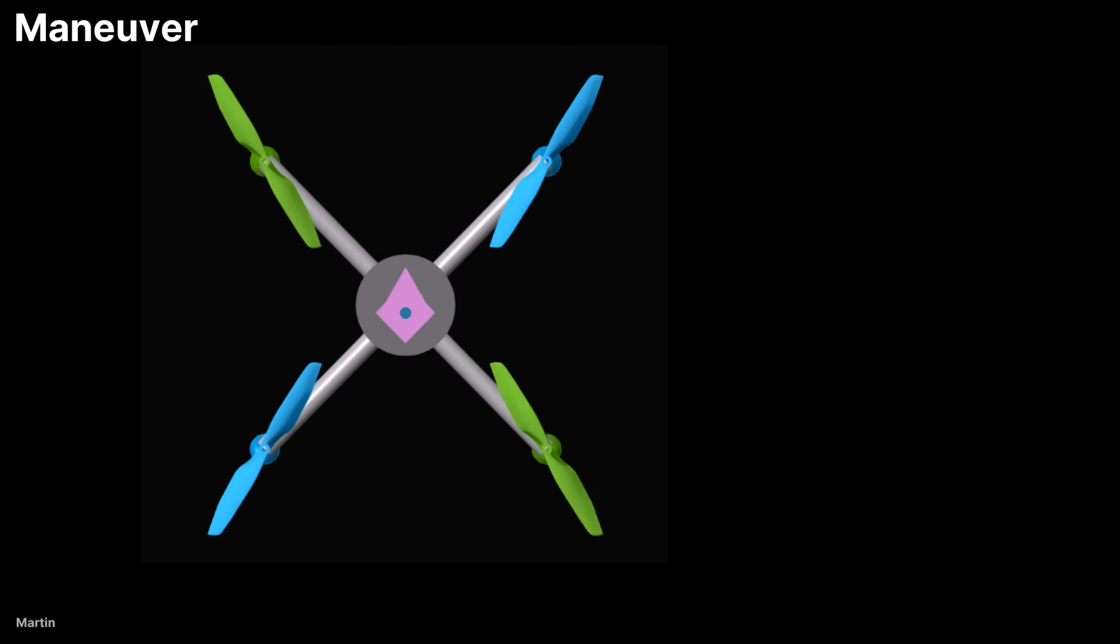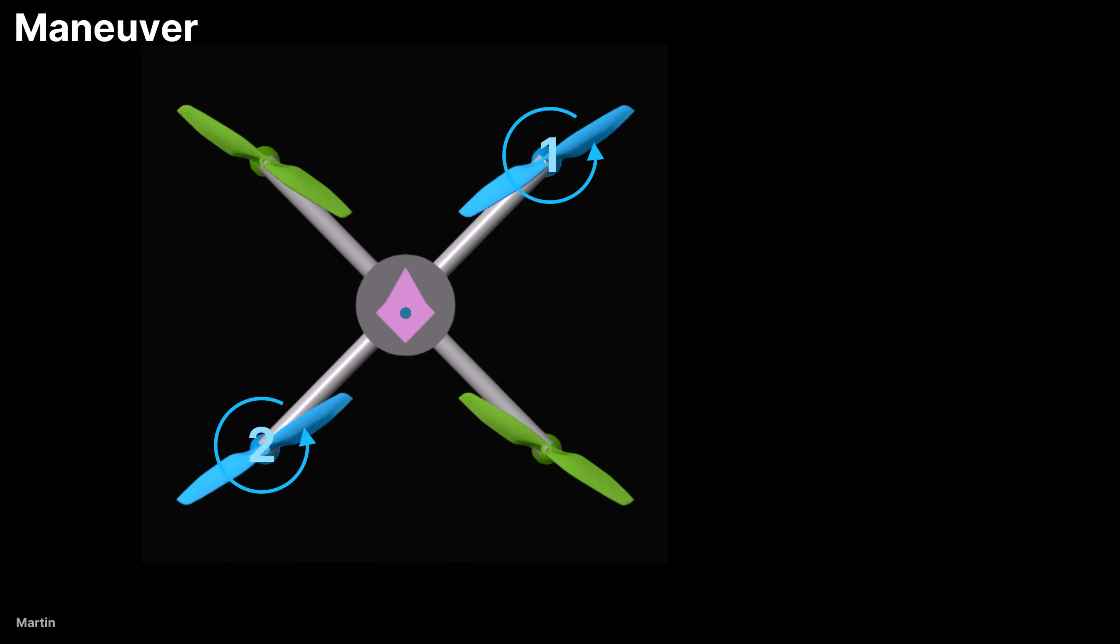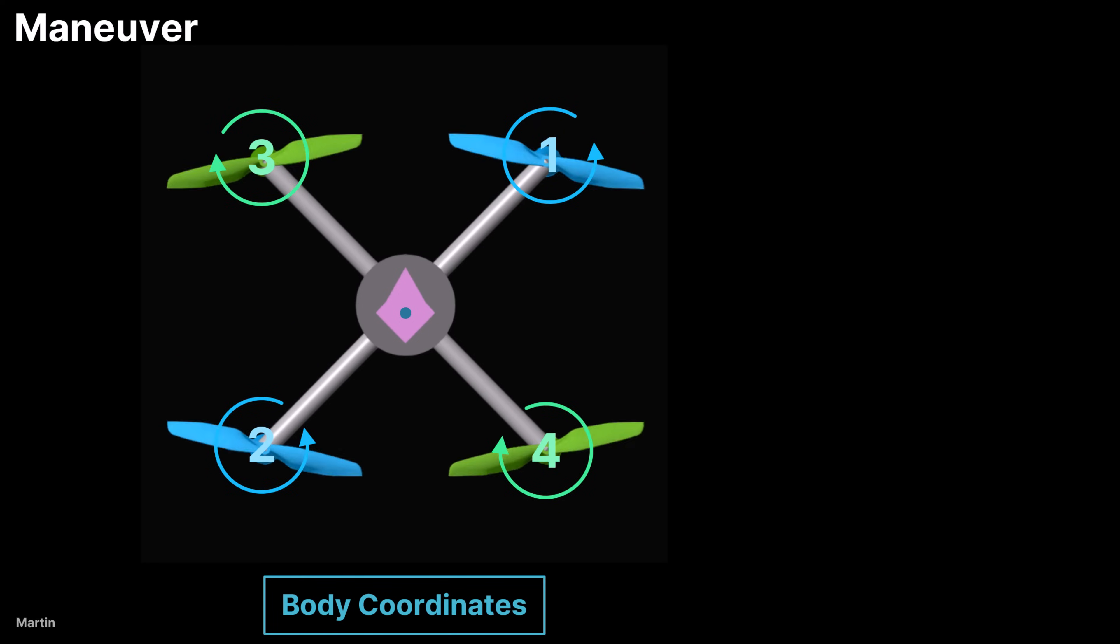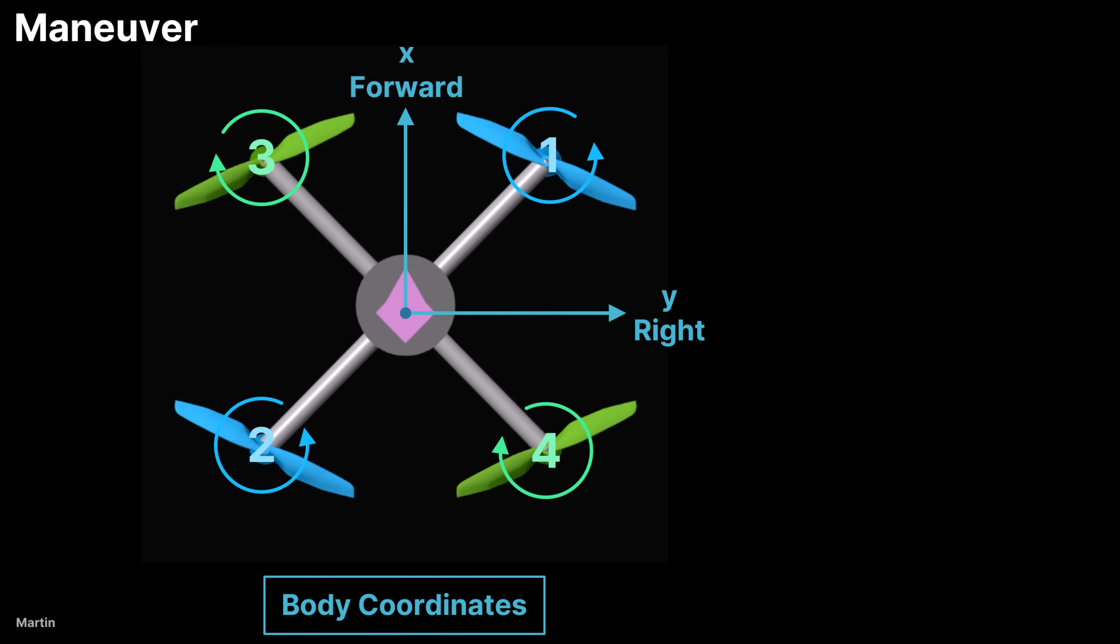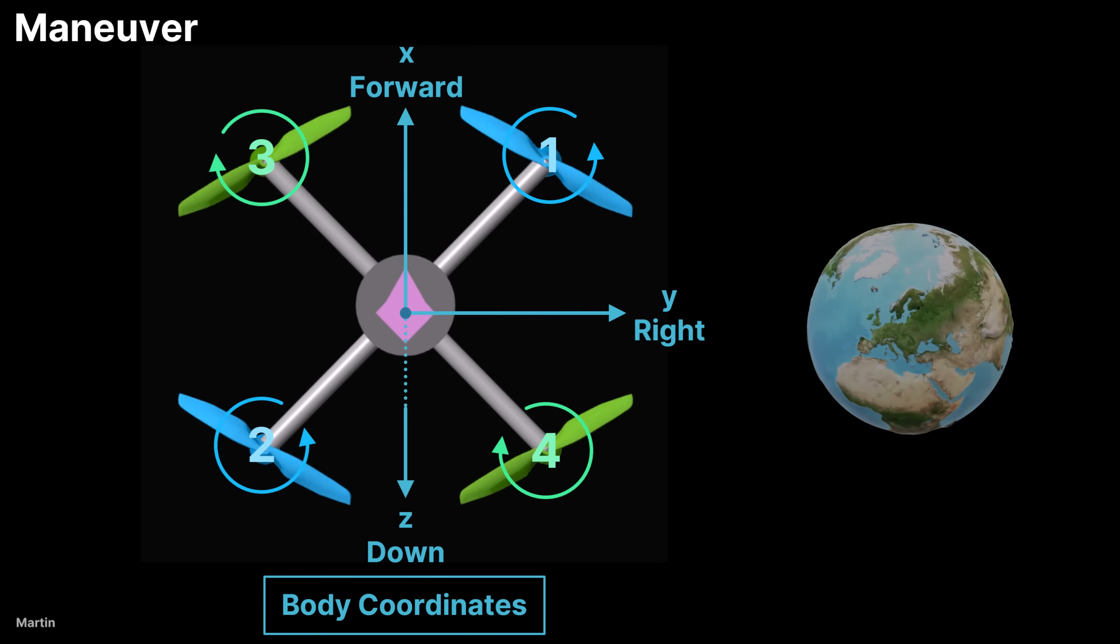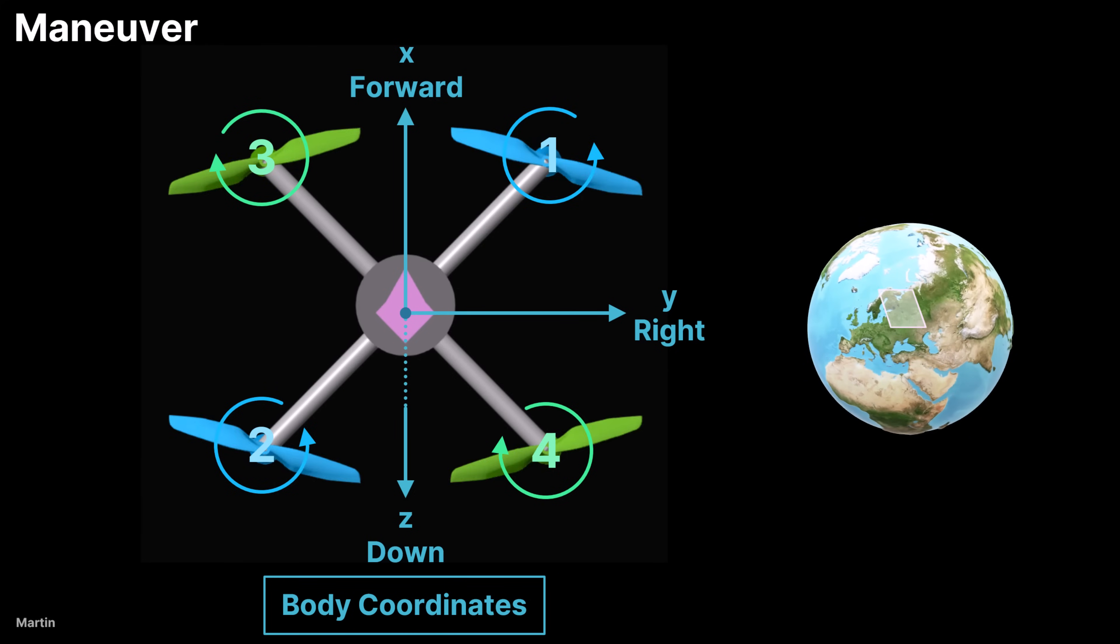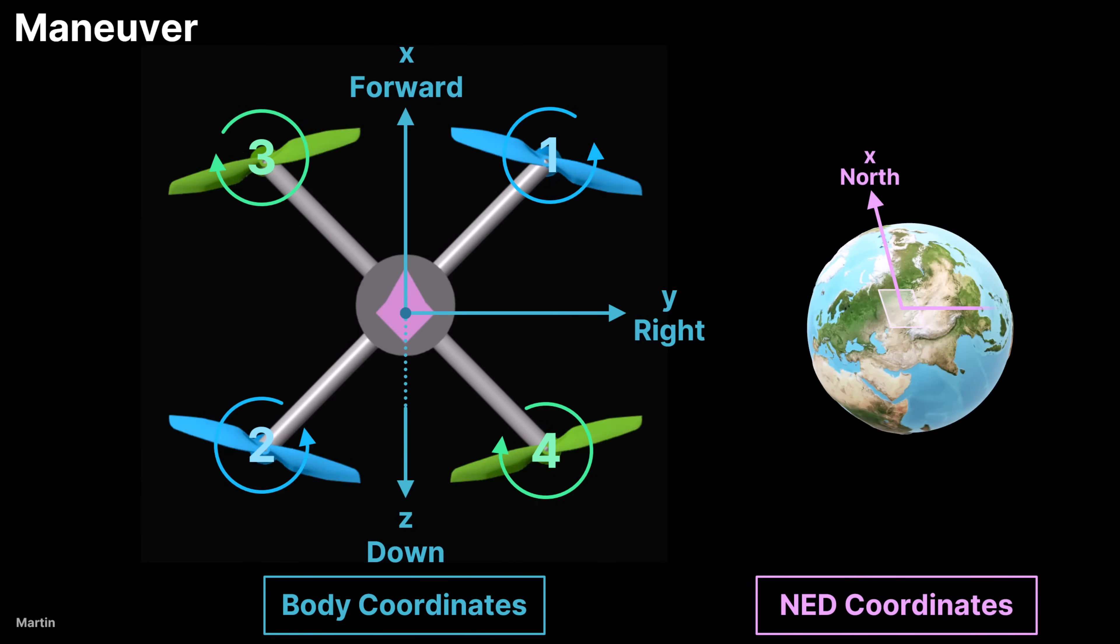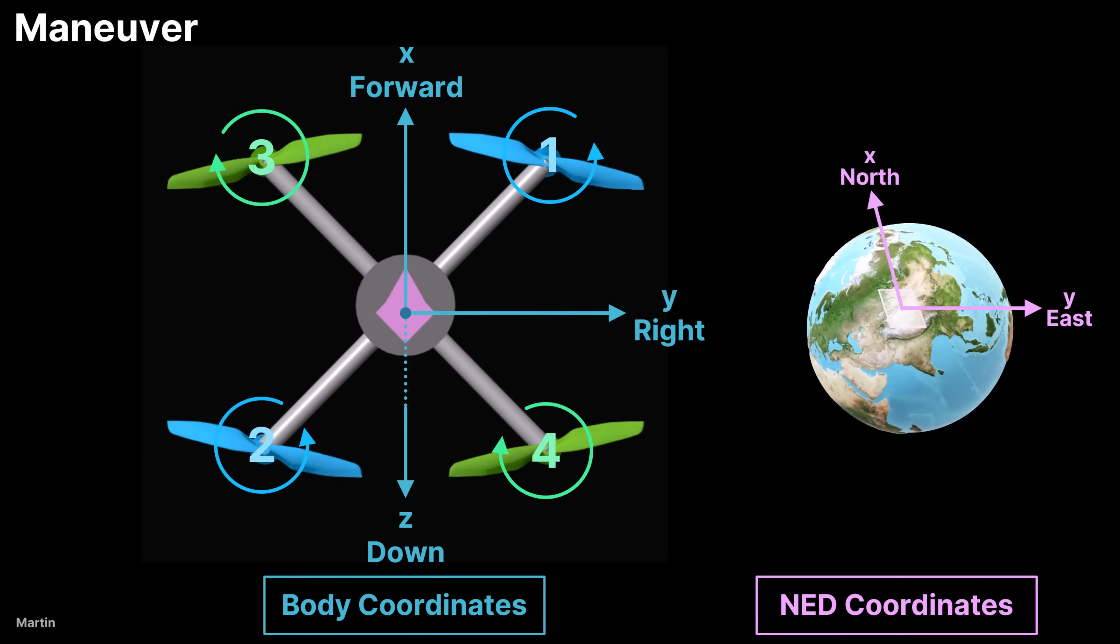The propellers of a quadcopter are labeled numerically as 1, 2, 3, and 4. Describing a quadcopter's maneuvers requires multiple coordinate systems. One essential system is the body coordinates, where the x-axis points forward, the y-axis extends to the right, and the z-axis points downward through the bottom of the vehicle. Another essential coordinate system is the north-east-down (NED) frame, where the x-axis points north, the y-axis extends east, and the z-axis points downward.